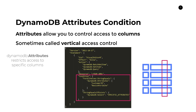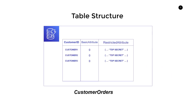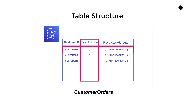Now let's look at a complete example combining both concepts. We have a customer orders table with customer ID, customer ID 123, basic attributes, and a restricted attribute — maybe containing sensitive data like address or personally identifiable information. I want to craft an IAM policy that gives access to just customer one's row, not customer two or customer three, and gives access to basic attribute but not restricted attribute.